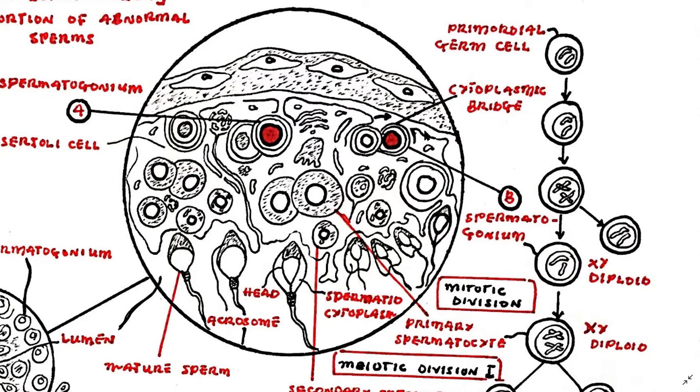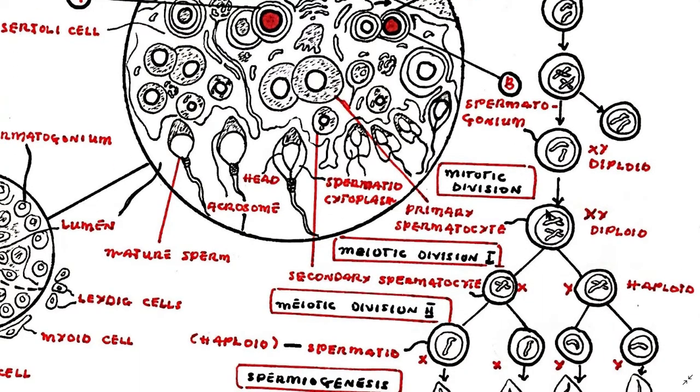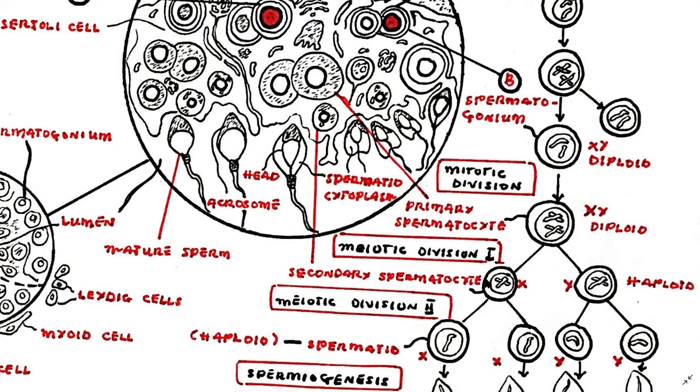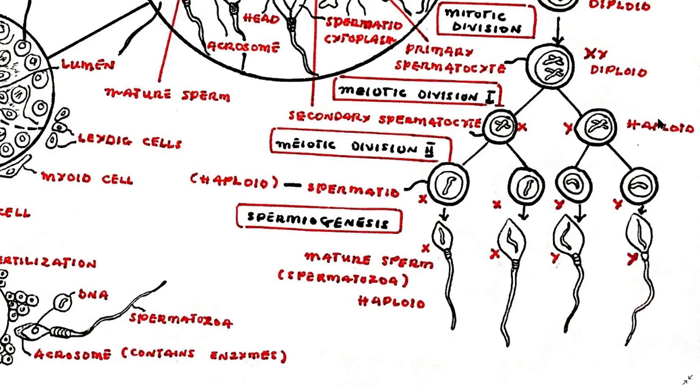The primary spermatocytes enter meiosis one. Homologous recombination of chromosomes occurs in this stage. One primary spermatocyte becomes two secondary spermatocytes. These two cells are now haploid. Each secondary spermatocyte may contain an X or a Y chromosome.